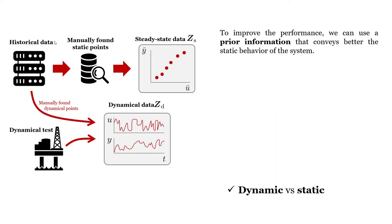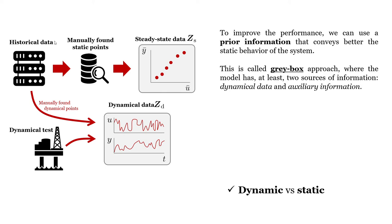To improve the performance, we can use prior information that conveys better the static behavior of the system. This is called the gray-box approach, where the model has at least two sources of information: the dynamical data and some auxiliary information.